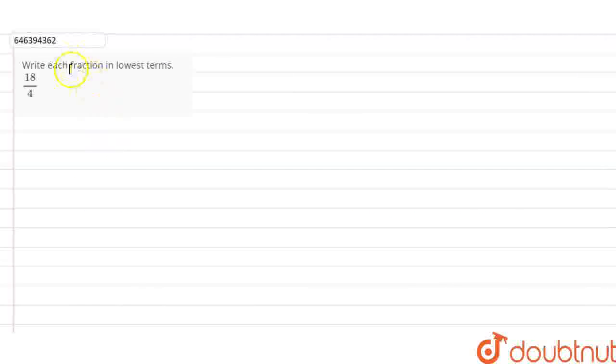Hi students! Our question is, we have to write each fraction in the lowest form. We have given the fraction 18 by 4. What do we need to write in the lowest terms?